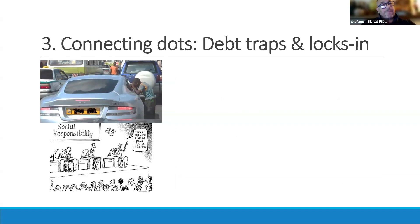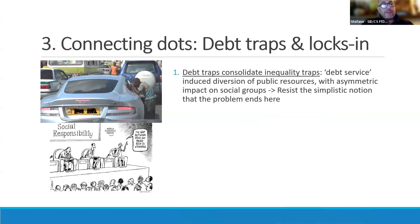This is the kind of economy within which we need to locate debt — the kind of politically and systemically determined debt described before. How do we connect the dots? First, debt traps consolidate inequality traps, because debt service induces a diversion of public resources with very asymmetric impact on social groups. We see this all the time when we highlight the amount of debt service compared against health or education expenses. Debt consolidates inequalities within countries, with bigger impact on those already marginalized.